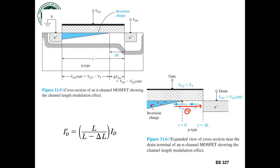And in fact, the current that I'm getting is going to be described as I sub D prime. And that's going to just be related to the channel length reduction. So L over L minus delta L times I_D. So the current is actually going up when I have this channel length modulation.